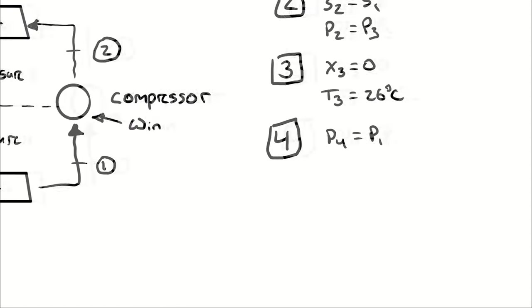The fact that net work in equals net heat out confirms the equations were built correctly — this is a useful check before proceeding. For a steady-state closed control volume wrapping the entire cycle, we must have Q_in + W_in = Q_out + W_out, and the numbers are consistent with that requirement.